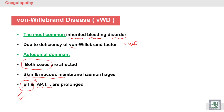Another important difference is that Von Willebrand factor is also critical for increasing the lifespan of Factor 8 — protecting and keeping Factor 8 active for many hours. In cases of Von Willebrand factor deficiency, the lifespan of Factor 8 decreases. This represents a key similarity between Von Willebrand disease and hemophilia, as well as an important distinction between them.